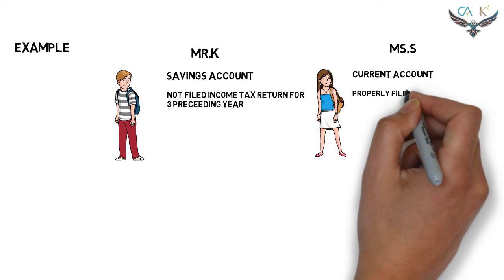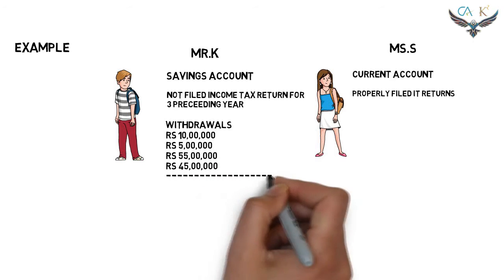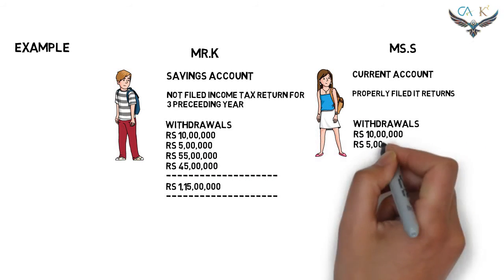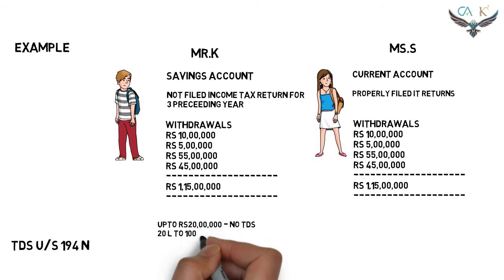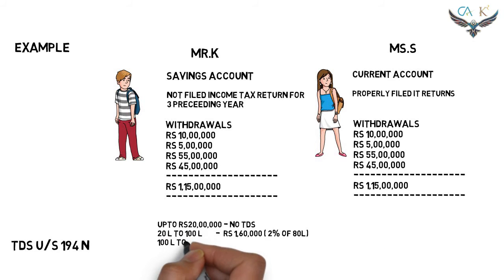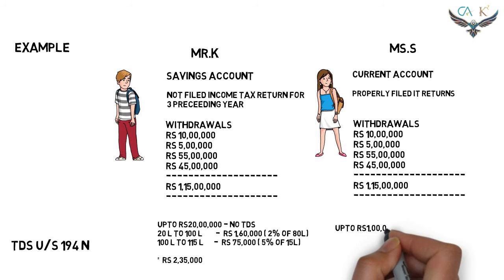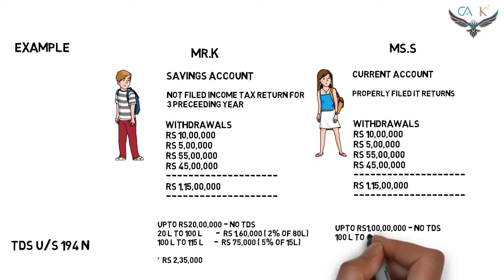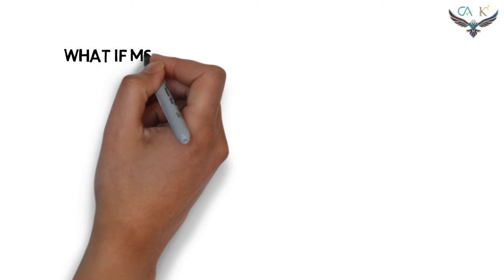Mr. K has not filed an income tax return for three consecutive preceding years, while Miss S has properly filed her income tax return. Both have made the same cash withdrawals, but the TDS rate is not the same for them. For Mr. K: no TDS up to 20 lakh; TDS at 2% from 20 lakh to 1 crore; and TDS at 5% beyond 1 crore. For Miss S: no TDS up to 1 crore; TDS at 2% for cash withdrawal beyond 1 crore.